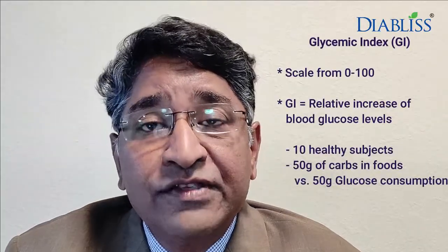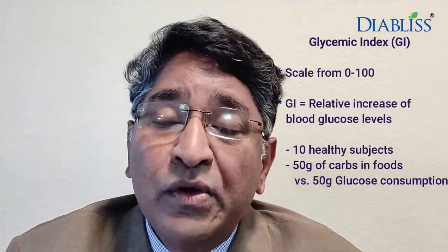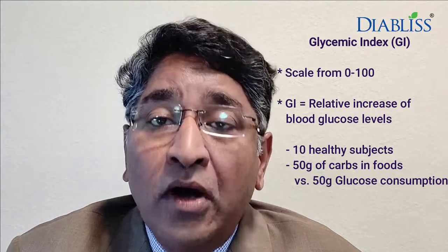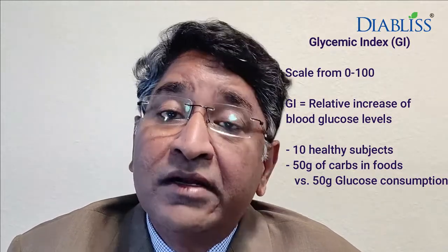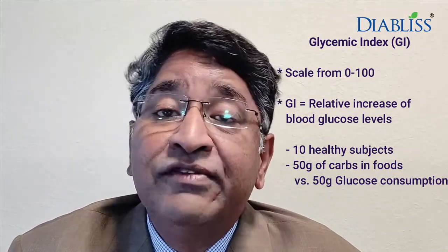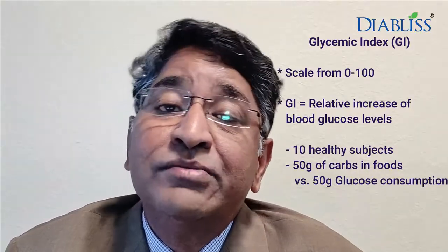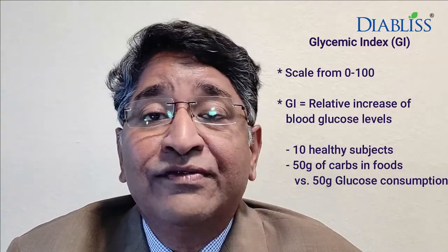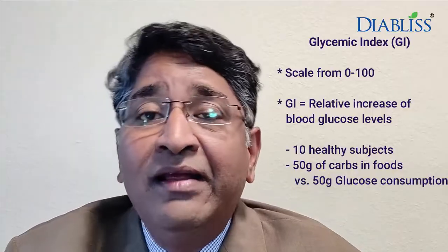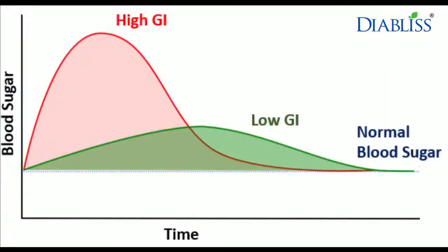The glycemic index, or GI, is a ranking system of foods on a scale of 0 to 100, based on how slowly or how quickly they raise blood sugar levels after eating 50 grams of carbohydrates. It is measured relative to consuming 50 grams of glucose among 10 healthy subjects. Carbohydrates with a low GI value are more slowly digested, absorbed, and metabolized, and cause a lower and slower rise in blood glucose levels.